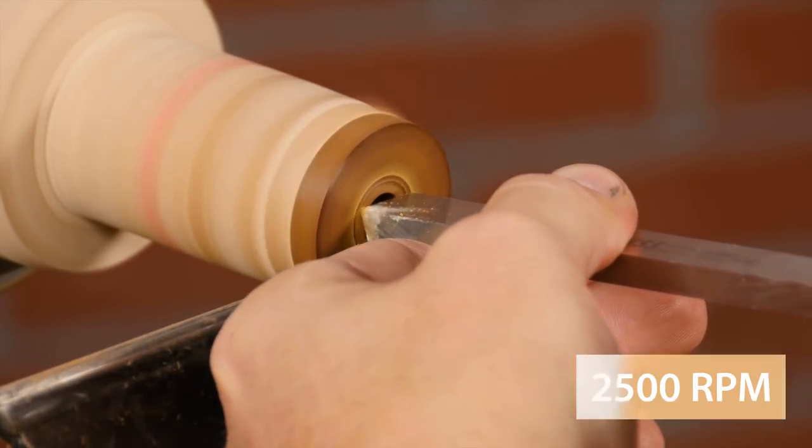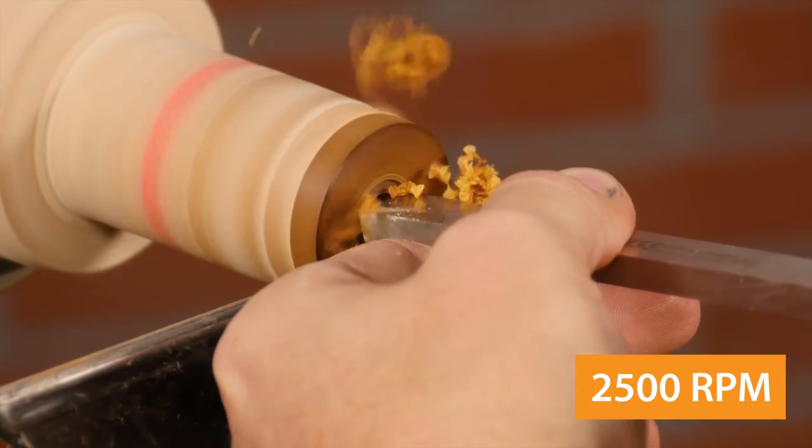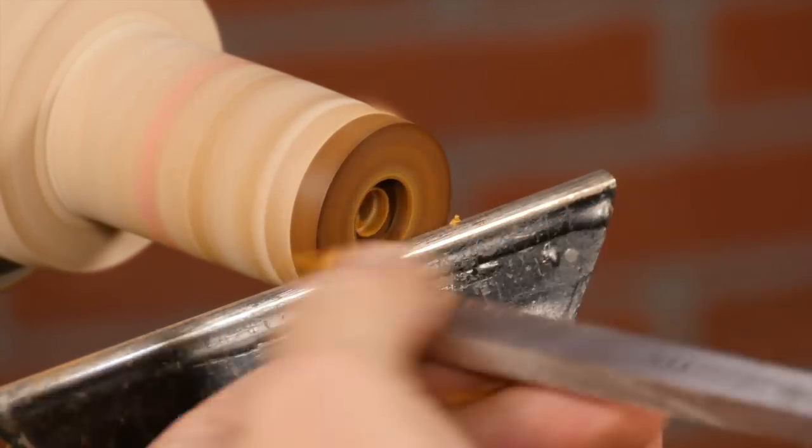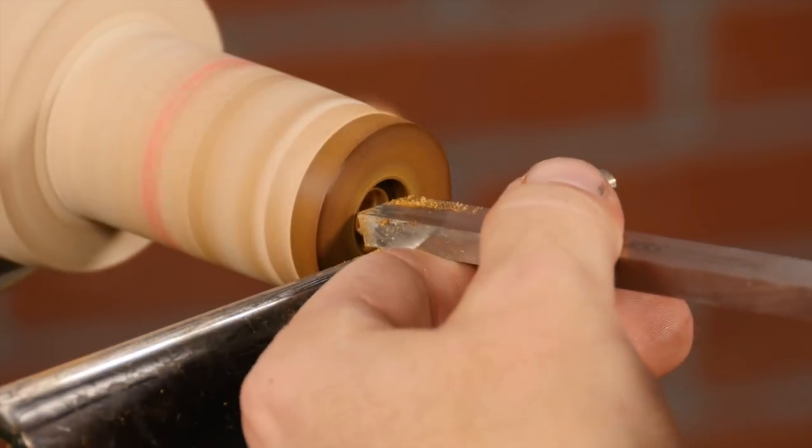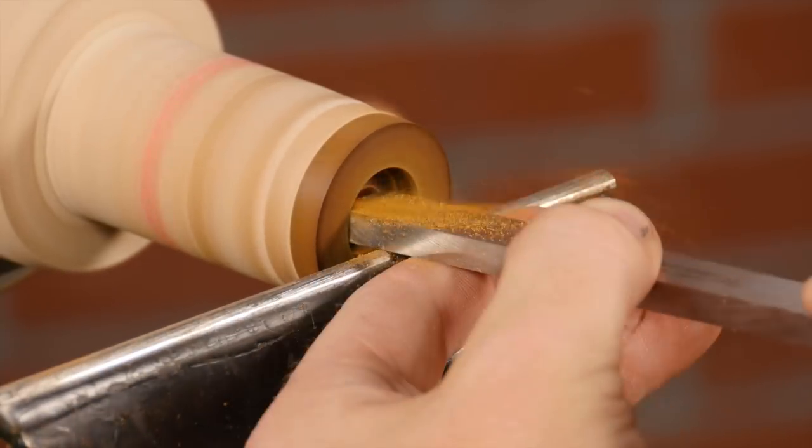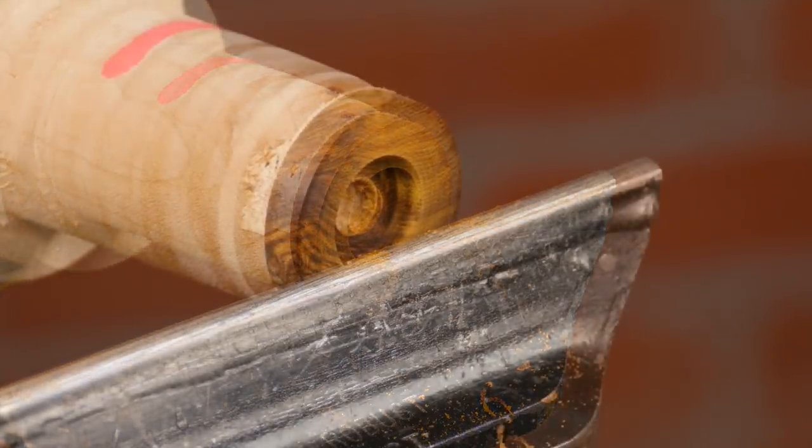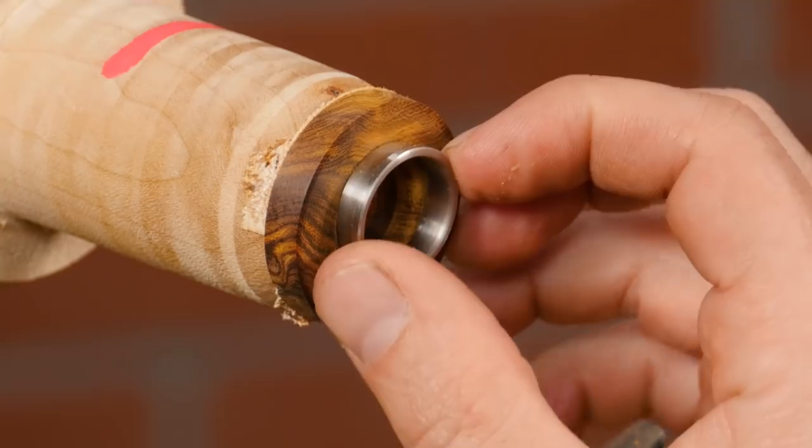Carefully use a scraper and open up the inside of the blank until the core can just slip inside. And of course check the fit frequently for a proper fit.